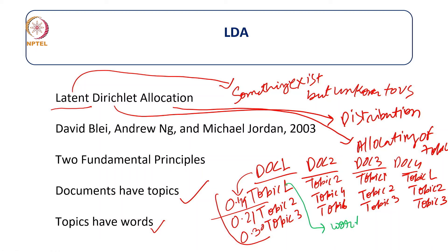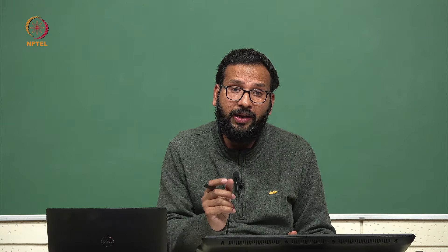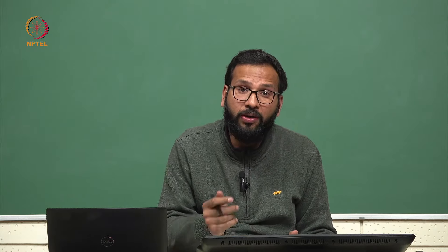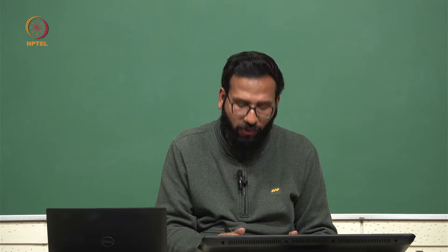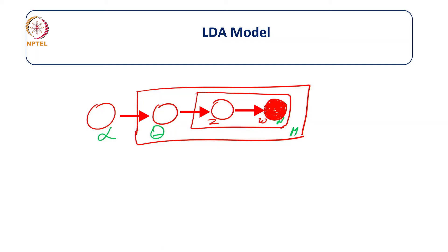The second principle is that every topic is made of a group of words. So all topics are made of some group of words — words 1, words 2, words 3, and so on. Similarly, the same way we have a parameter value for topics per document, we can have another parameter that defines the value of words in a topic. So let us now briefly see the LDA model.